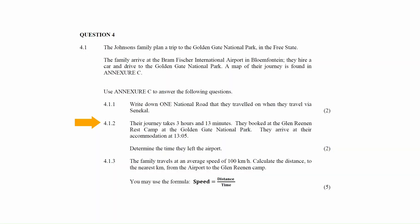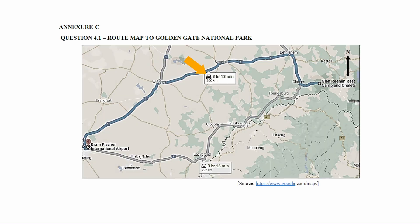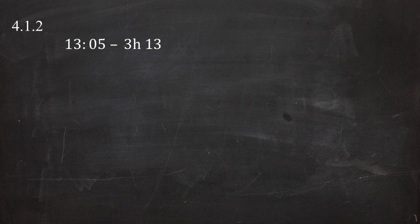In question 4.1.2, it is stated that the journey takes 3 hours and 13 minutes. They booked at the Glen Renan Rest Camp at the Golden Gate National Park and arrived at their accommodation at 5 past 1 in the afternoon. You are instructed to determine the time they left the airport. To find out when they left, we need to subtract 3 hours and 13 minutes from 1:05 pm, which gives us 9:52 am — about 8 minutes to 10 in the morning.